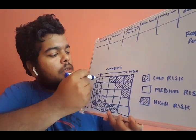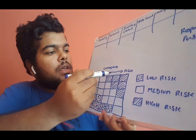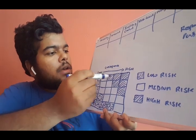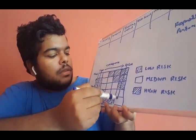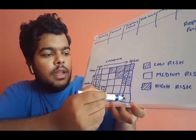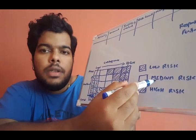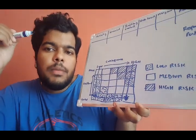So at that time, what will happen? So see here, this consequence is high, but this likelihood is low. It's meeting here. See, so we are having a medium risk. The residual risk is medium here.